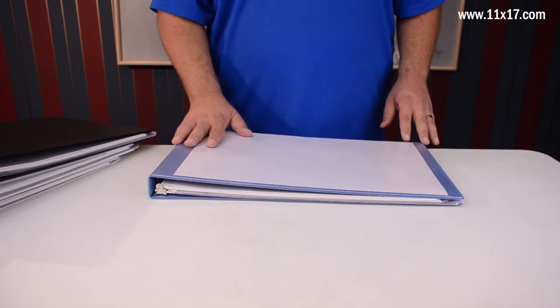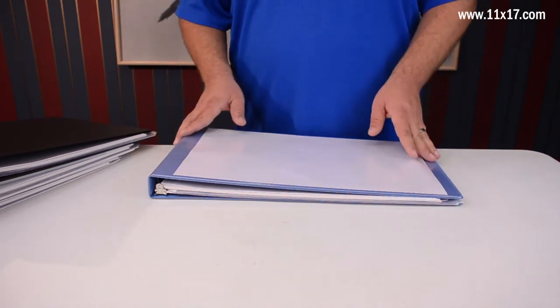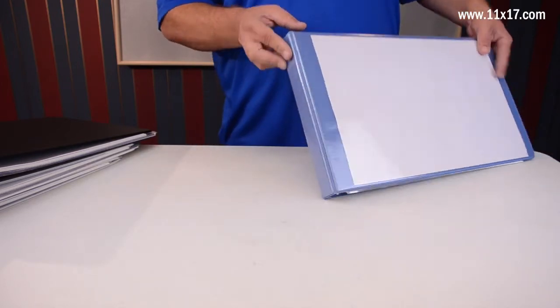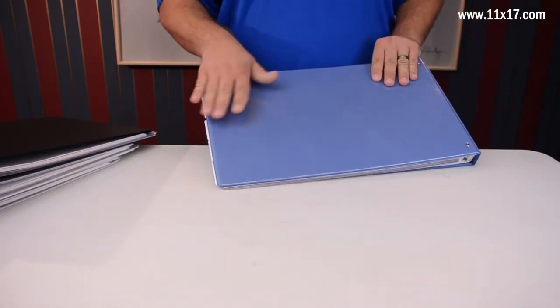On the Ruby Paulina product, we can clearly see that it has a clear overlay pocket on the front cover, the spine, and the back cover.